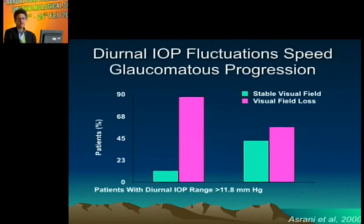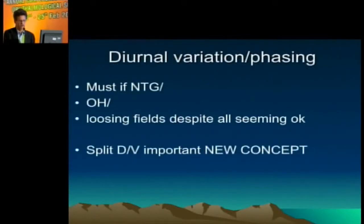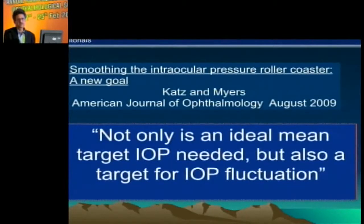Doing a diurnal variation is very important because it tells you where the pressures are coming from, and we want to flatten that diurnal variation. It is not only about achieving a mean pressure — the mean pressure should be maintained consistently throughout the day. If the diurnal variation is less than three or four, we are in a very good position.